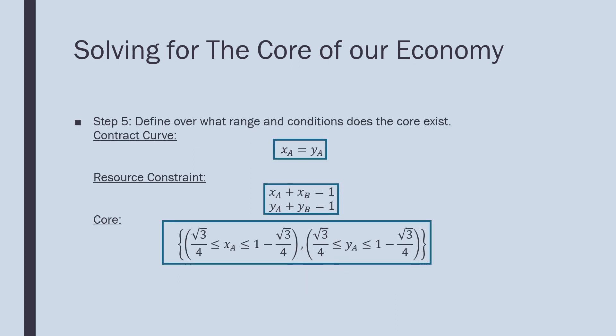Step 5: find over what range and conditions does the core exist. We first note that we have a contract curve, meaning this is where along the path our core exists—it defines the road where our consumers are consuming. A resource constraint defines the size of our economy in general, size being defined as the number of goods in motion.